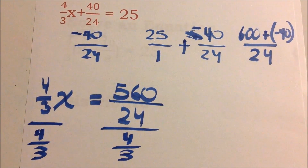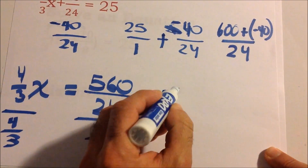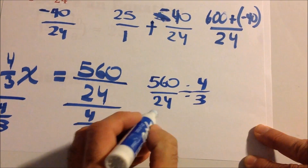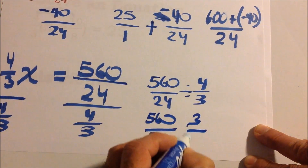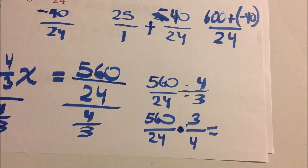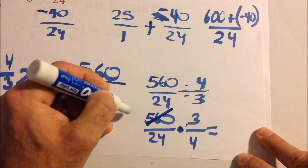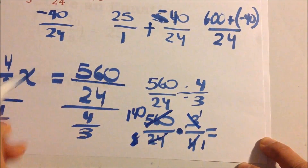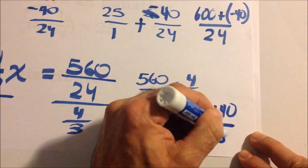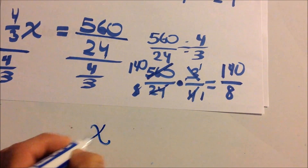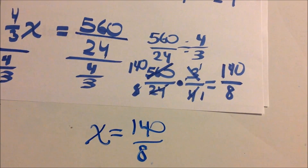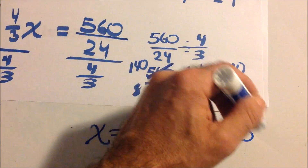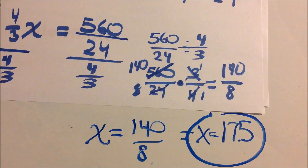You could reduce 560 over 24 to make it easier. Dividing both sides by four-thirds — remember, dividing by a fraction means flipping and multiplying. We get 560 over 24 times 3 over 4. Simplifying: 4 goes into 560 giving 140, and 4 goes into 4 giving 1; 3 goes into 24 giving 8. So x equals 140 over 8, which reduces to 17.5, since 4 eighths is one-half.